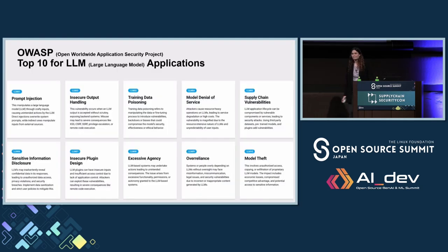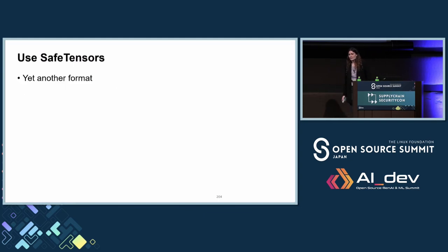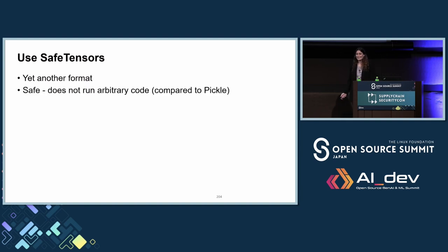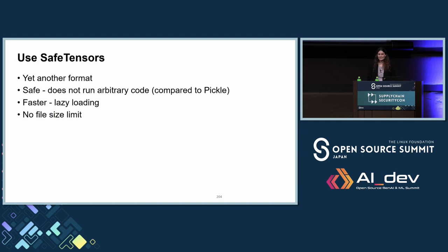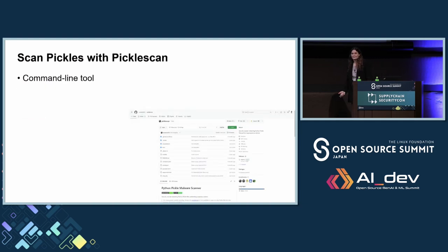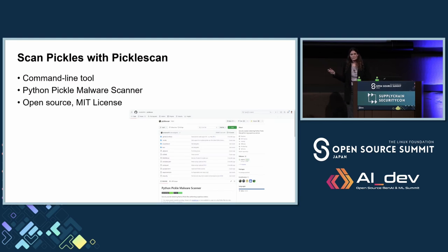Now, some takeaways. OWASP has a top 10 for LLMs which keeps on updating — I suggest you take a look online and check it out. If you do want to save models, use SafeTensors instead: it's safer, it doesn't write or run code, it's faster, and it has no file size limit. And if you do choose to use pickle — I don't know why — use PickleScan or some other tool. This is a command-line tool, it scans for malware, and it's open source. We also had some research a few weeks ago and we're about to publish some interesting stuff about PickleScan and more about Hugging Face — stay tuned.